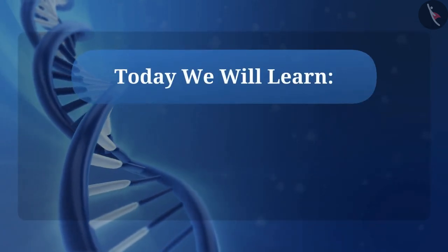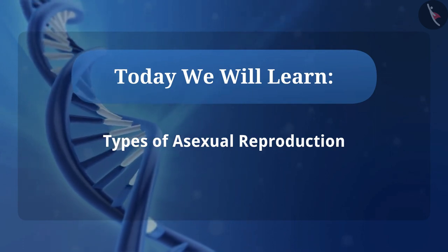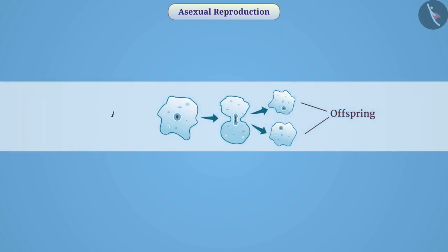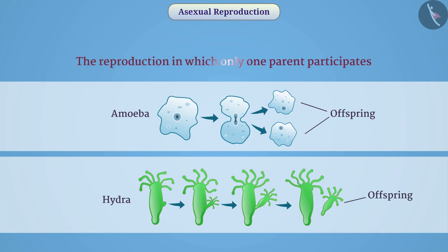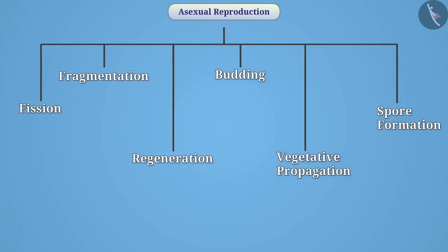Today we will learn about the types of asexual reproduction. Some organisms produce the next generation from a single parent, like amoeba, hydra, etc. The reproduction in which only one parent participates is called asexual reproduction. A variety of asexual reproduction is found in different organisms, and on that basis, there are different types of asexual reproduction.